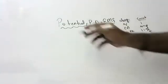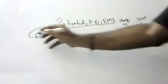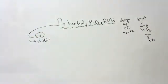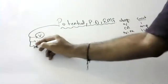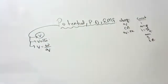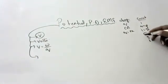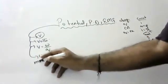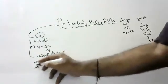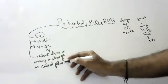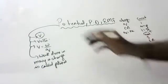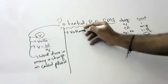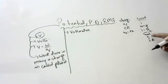Now potential — denoted by V, units are Volts. Formula: V is equal to W by Q. The definition: work done in moving a charge is called potential. Current is measured by ammeter — say 'ammeter' correctly. Potential is measured by voltmeter — say 'voltmeter' correctly.